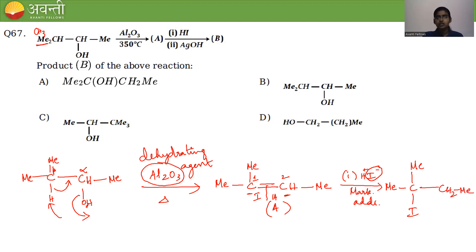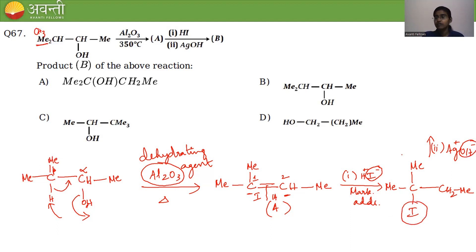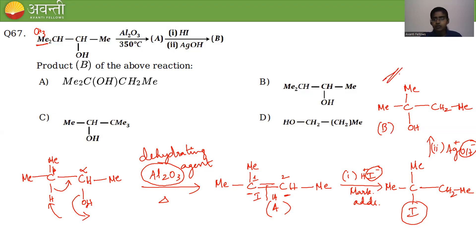We get the iodo compound. Then it is treated with AgOH — this is nucleophilic substitution. OH⁻ replaces I⁻, giving the alcohol product with two methyl groups. This is compound B and the answer is option A.